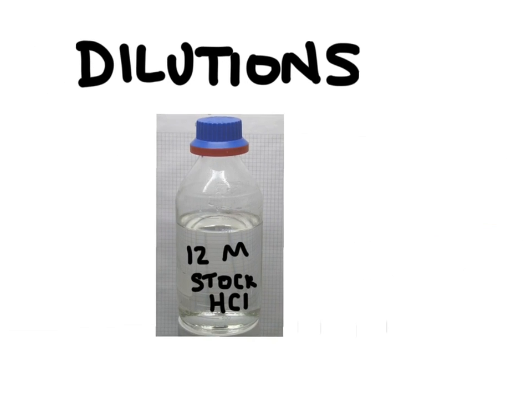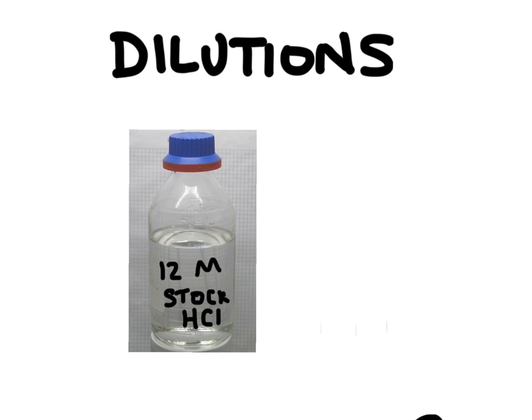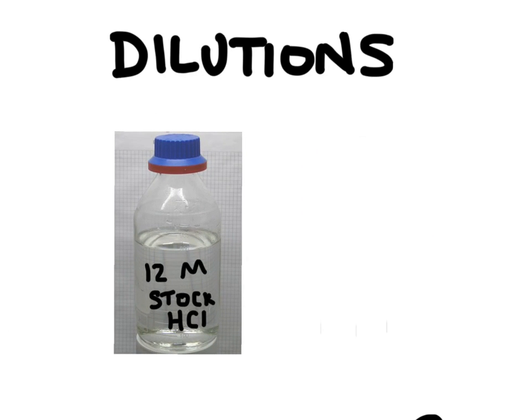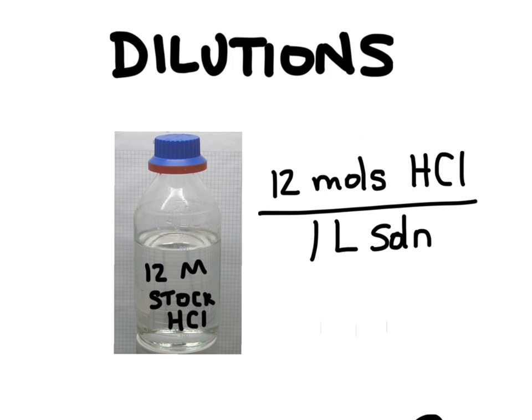For example, hydrochloric acid comes in a 12 molar stock solution, which means there are 12 moles of HCl for every liter of solution. That's a really concentrated solution. It'd be rare that you would ever need HCl in that high of a concentration, so we'd have to dilute it.